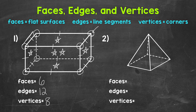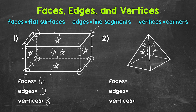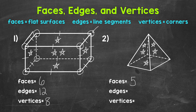For number two, we have a square pyramid. Let's start by identifying and counting the faces. The two faces up front: one, two. Then a face to the left in the back: three. And a face to the right in the back: four. And then we have the base at the bottom: five total faces. Now let's identify and count the edges. Starting up front: one, two, three, four. Now around the base: five, six, seven, eight. So eight total edges.